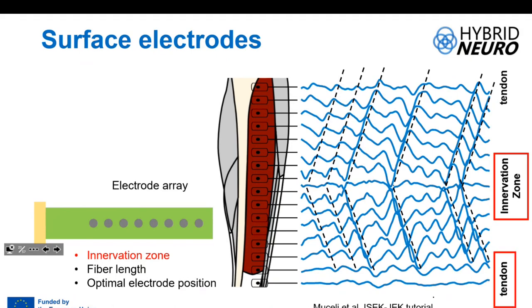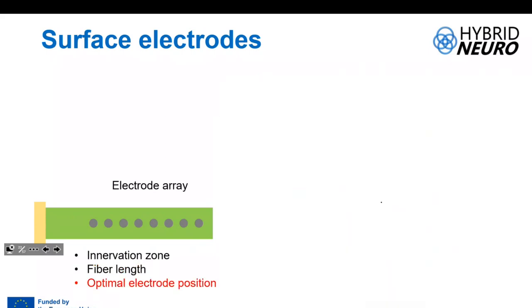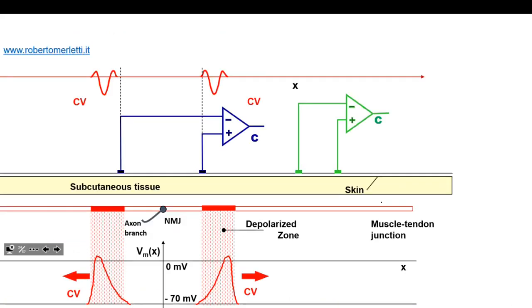Looking at the bottom of the signal, there is no propagation anymore near the tendon — you only recognize non-propagating components. So from an array image, we can calculate the difference between the innervation zone and the tendon, giving an indication of how long the fibers are, which is sometimes used to understand how to position the electrodes.